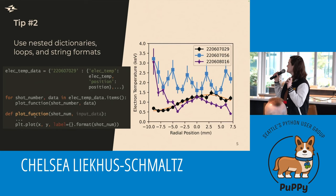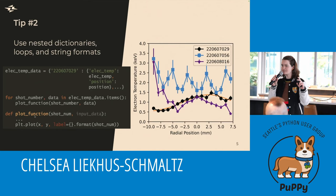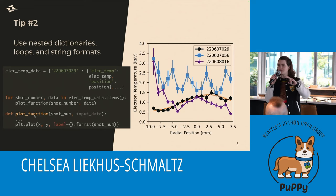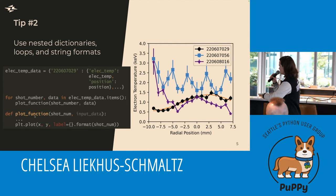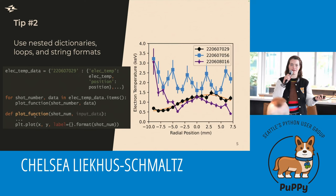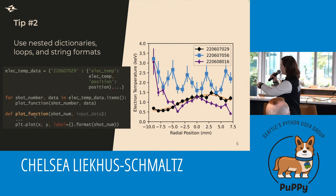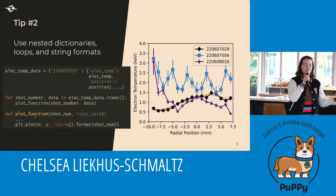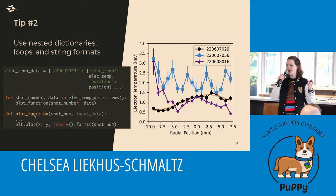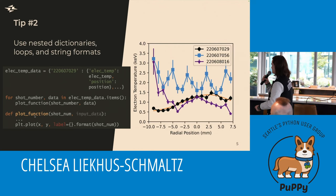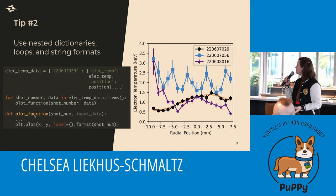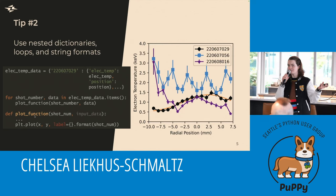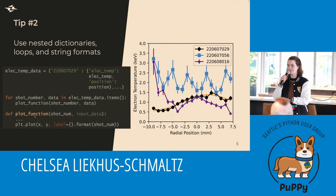Tip number two is to use nested dictionaries, loops, and string formats to help make sure that you don't mislabel any of your data. In this particular example, I had three different curves that all had different labels, and I wanted to make sure I didn't accidentally swap them around. I'll make a dictionary where the key is the label for the plot, then loop through my data and pop that into my label. That way I don't accidentally swap these labels around. You could also make this a dictionary with classes, but for fast data analysis either approach works.